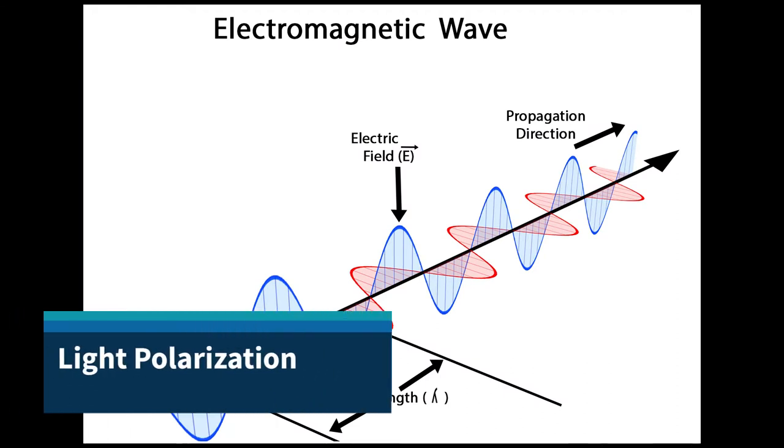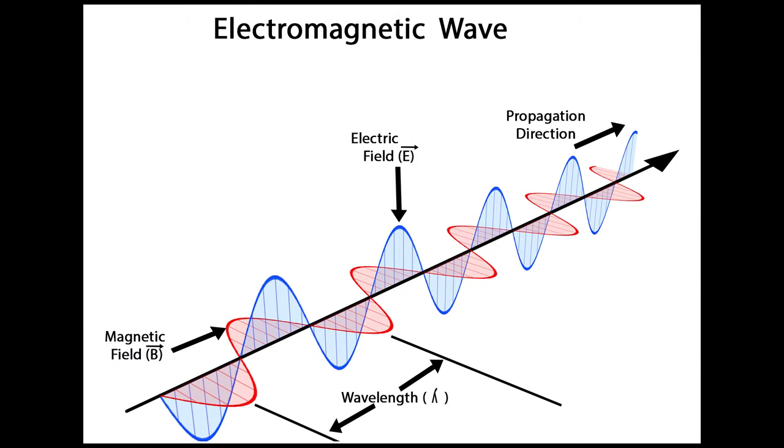So first off, what is light polarization? As many of you likely already know, light is made up of two components, an electric and magnetic field that oscillate perpendicular to each other and to the direction of light propagation, as shown in the diagram.